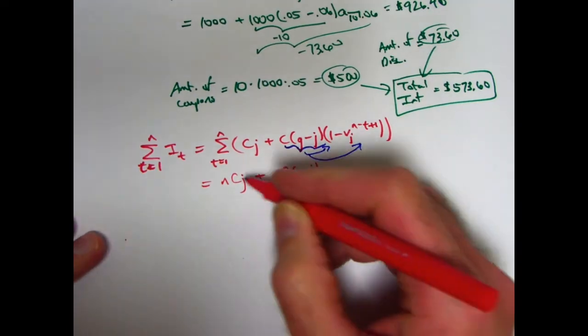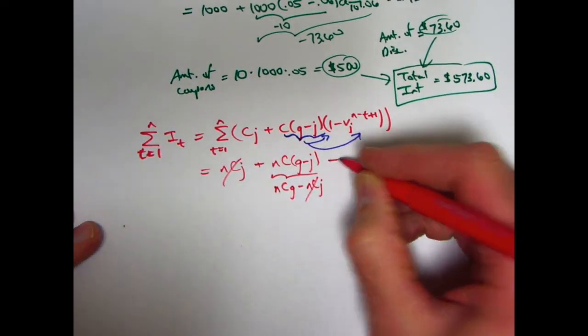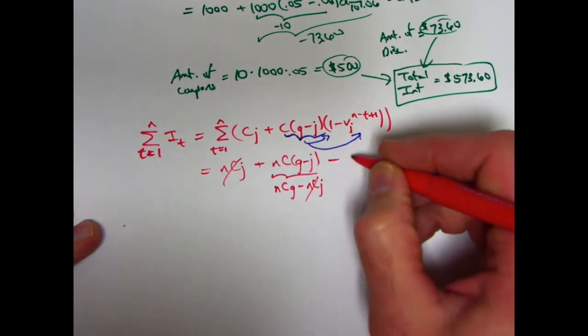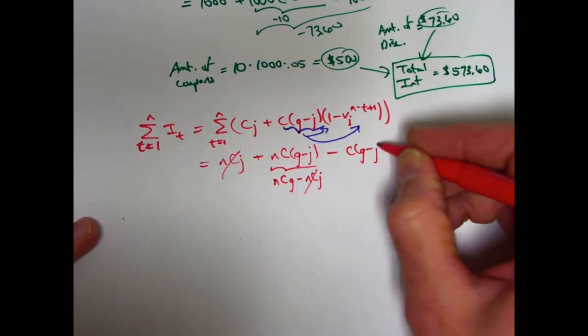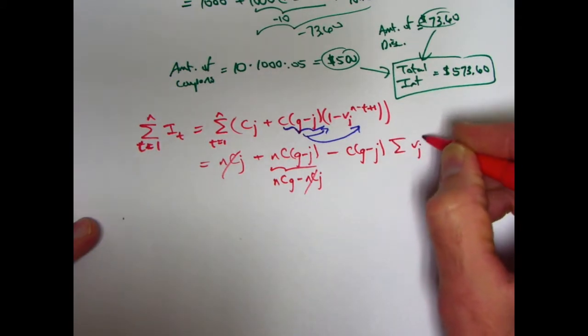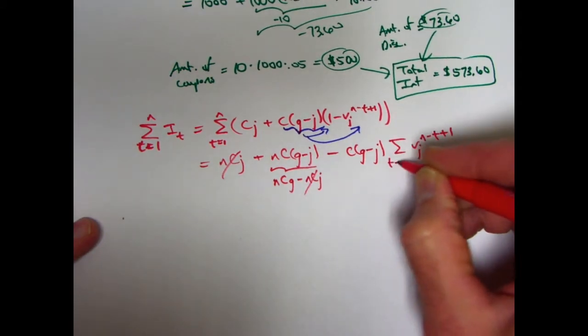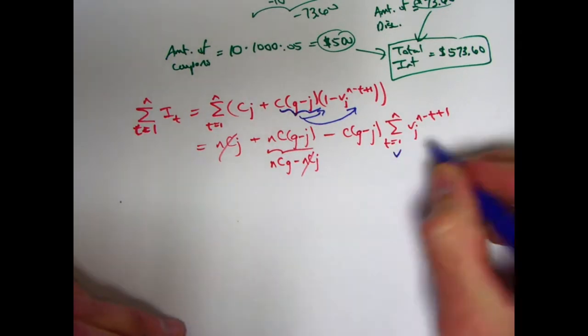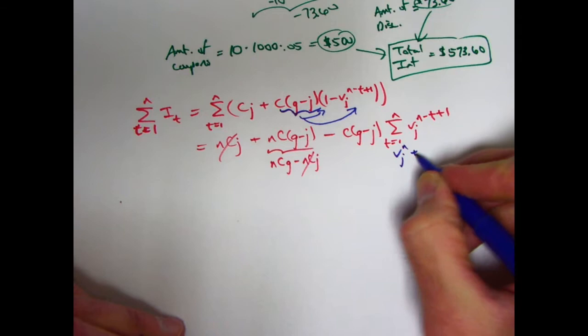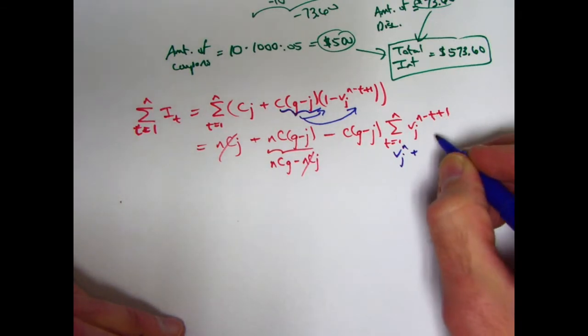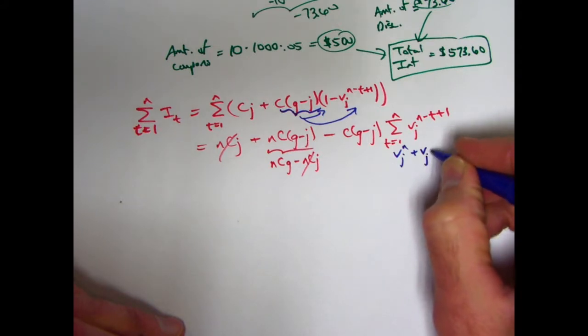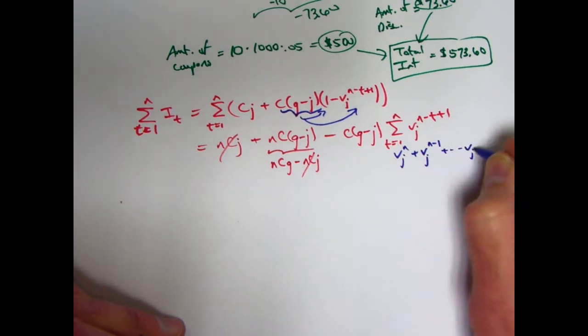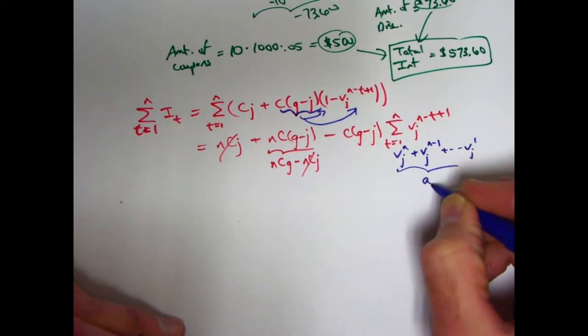You could distribute the N times C through those parentheses to get this. And you're feeling happy. The N, C, J's cancel. That's good. You also have a minus, okay, C, G minus J times this. That part can get factored out of the summation. You get C times G minus J times the summation of the V_J's to these different powers. T goes from one to N. You're wondering, maybe that's A_N. And in fact, you double check it and you see that it is when T is one, this is the power will be Nth power. When T is two, negative two plus one will be negative one. So you have V_J to the N minus one power, etc. When T is N, N minus N plus one is one. You have V_J to the first power. So that is the same thing as A_N at J.